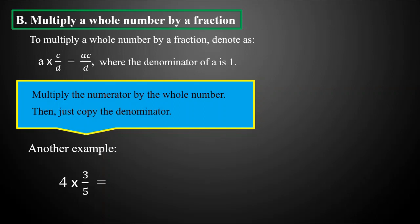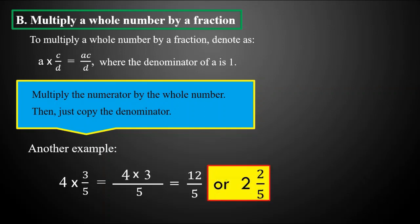Another example: four times three-fifths. We multiply the numerator three by the whole number four, so our equation is four times three, then copy the denominator which is five. That gives us twelve over five. Twelve over five is not yet in the lowest term, so we divide twelve by five. We get two with a remainder of two, so our final answer is two and two-fifths.